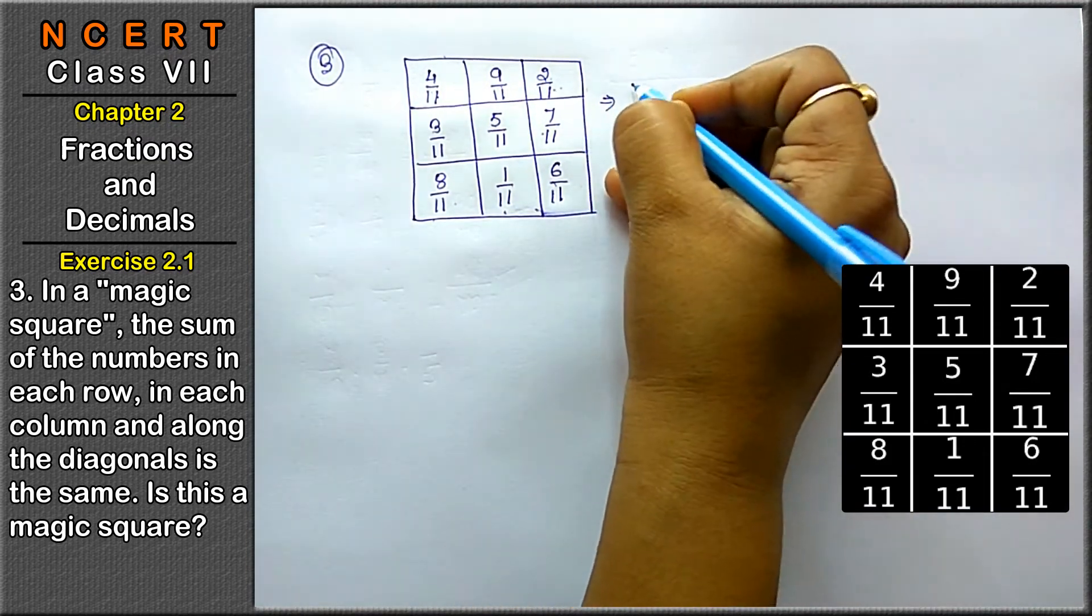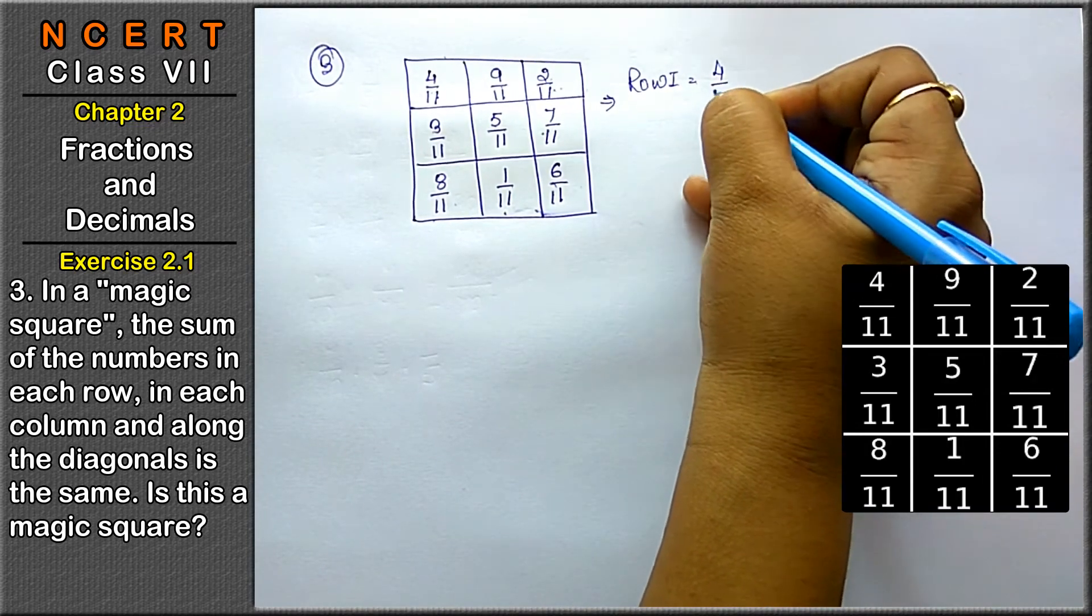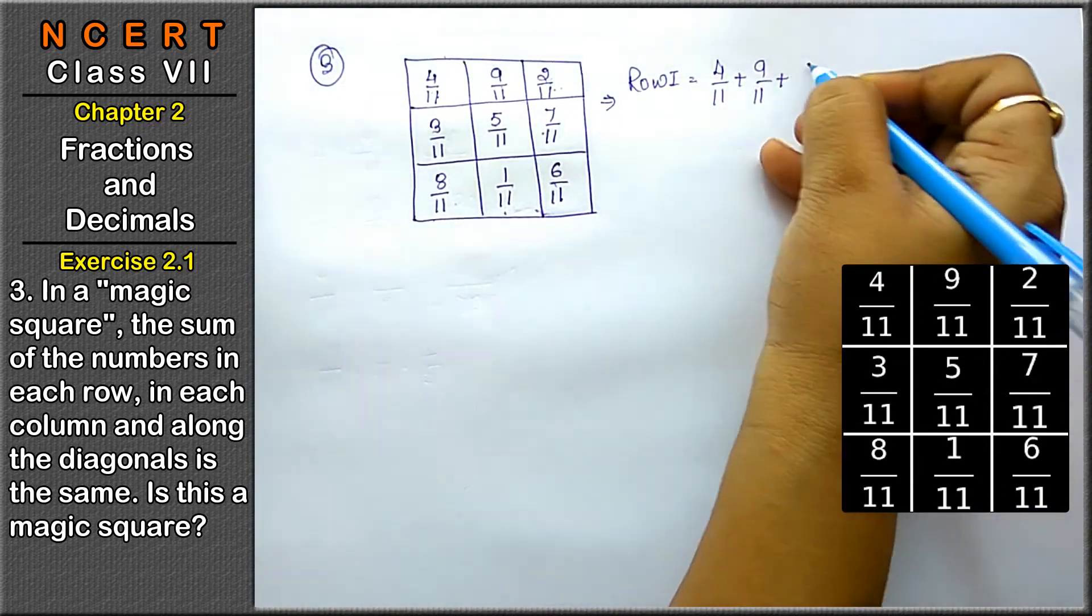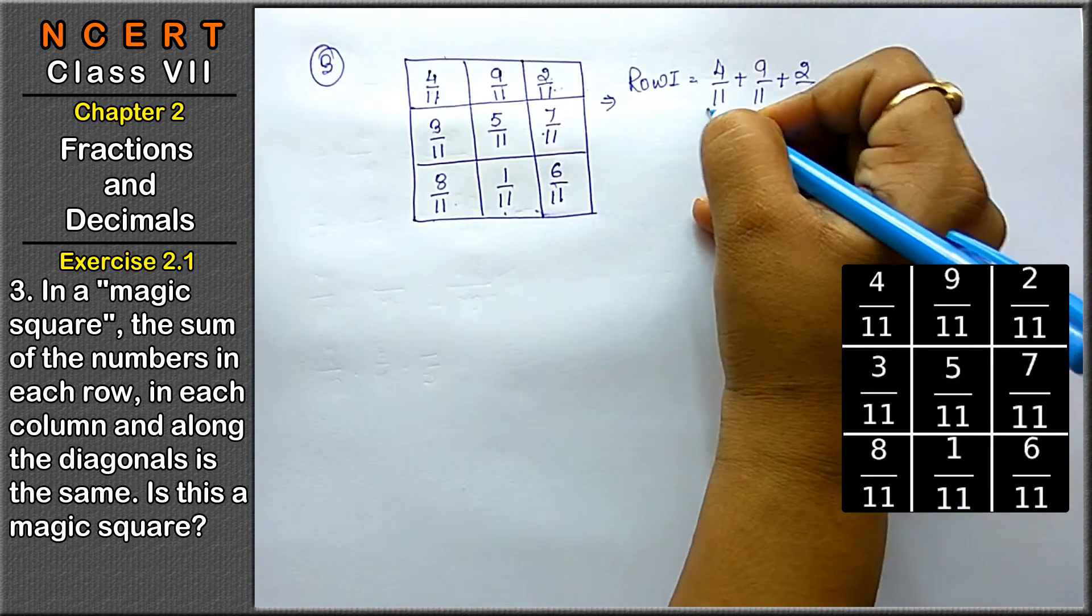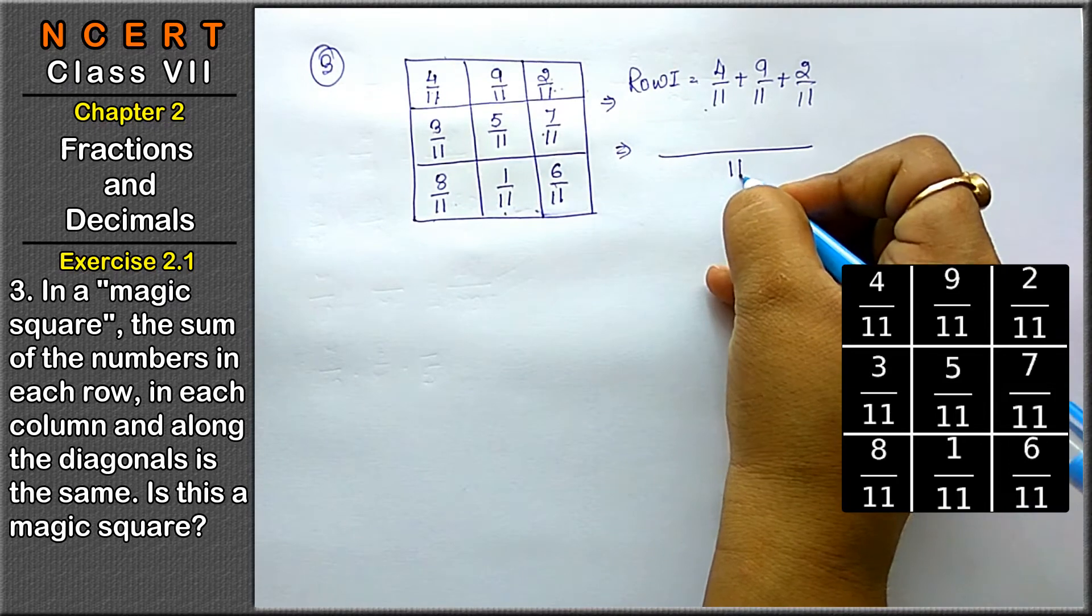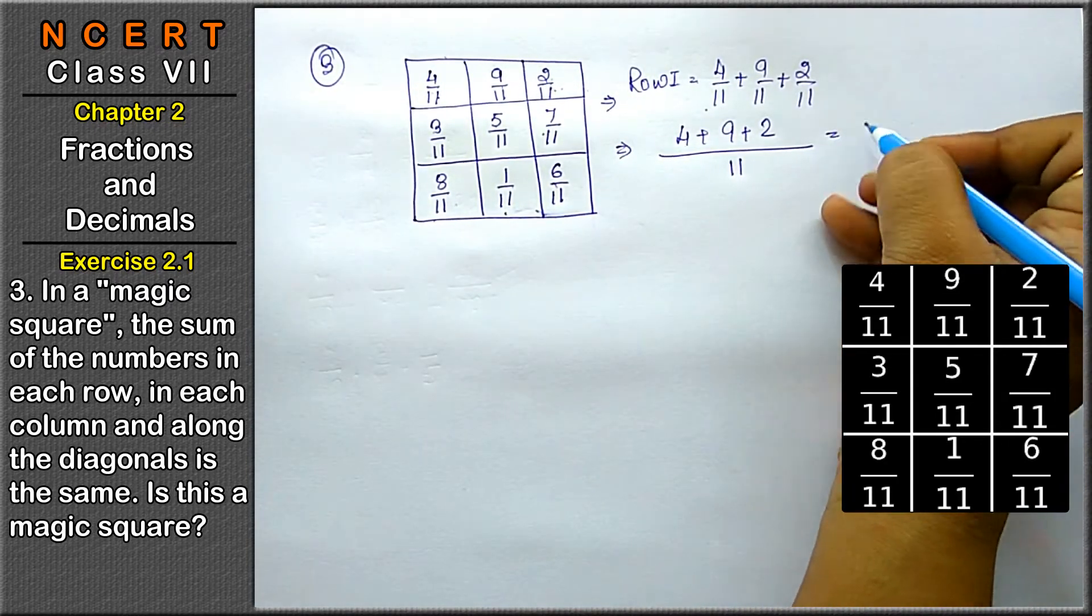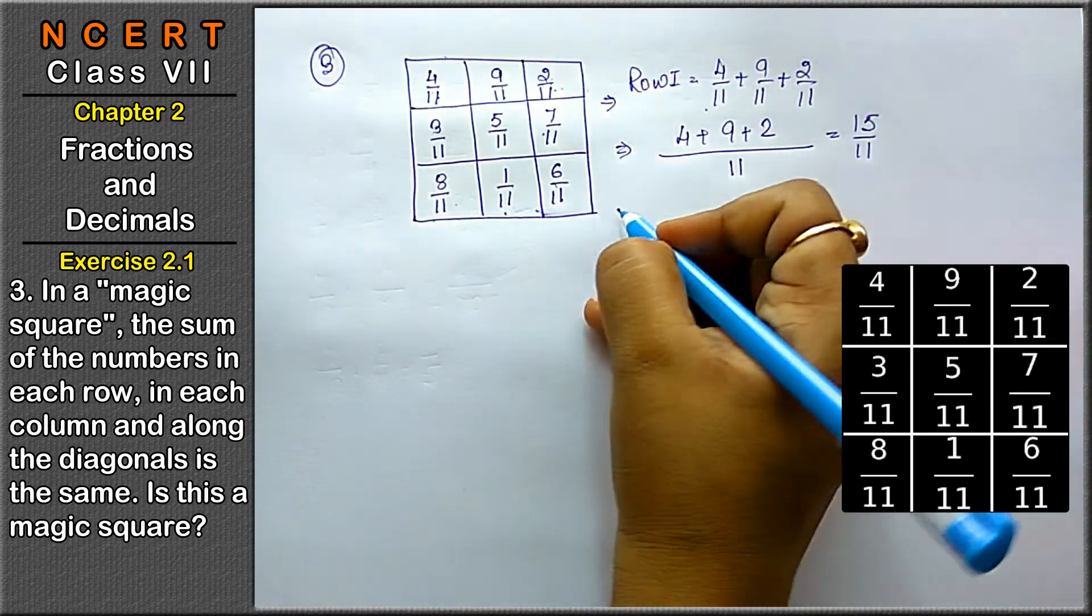Row first, dekhi 4 upon 11 plus 9 upon 11 plus 2 upon 11. Friends, denominator same hai, that means 11 is the LCM. 4 plus 9 plus 2, that means 15 upon 11 is the answer.